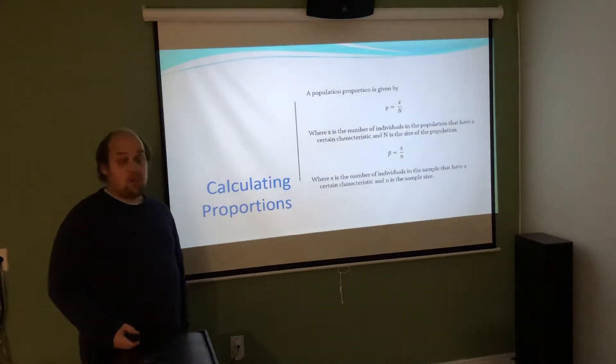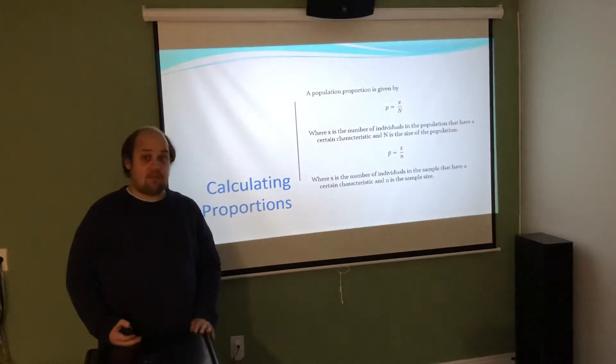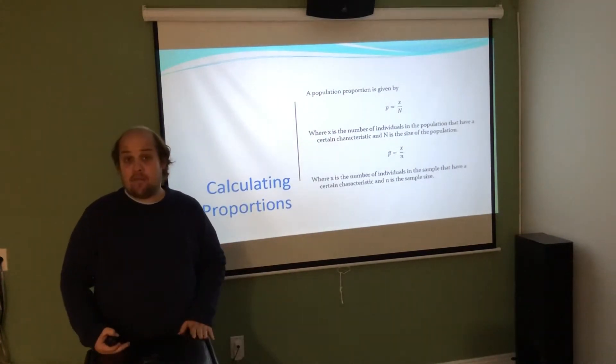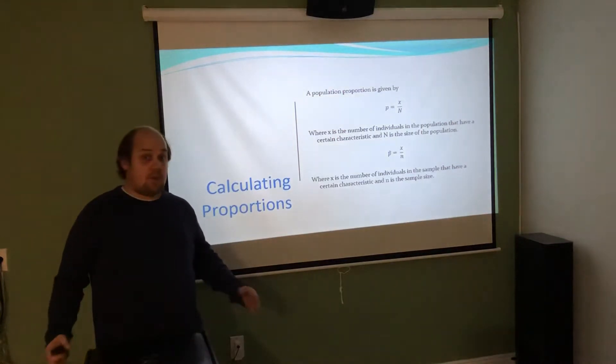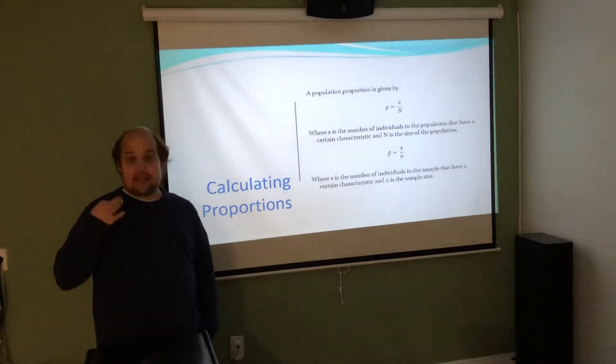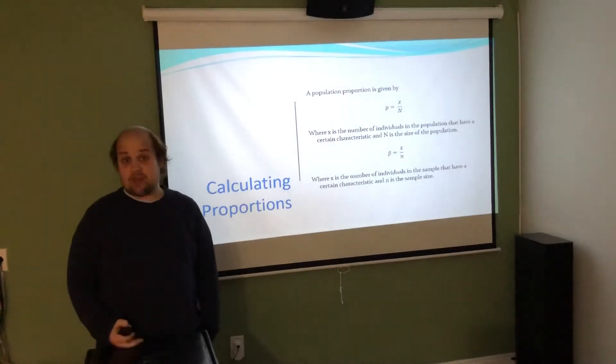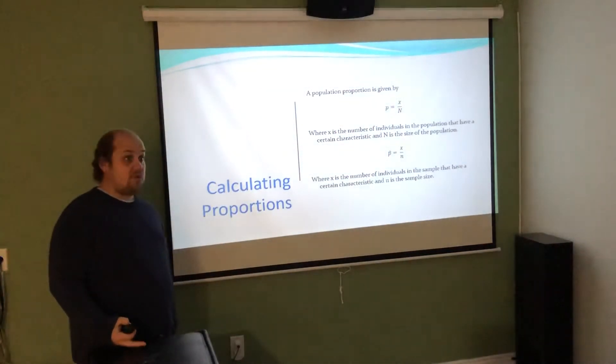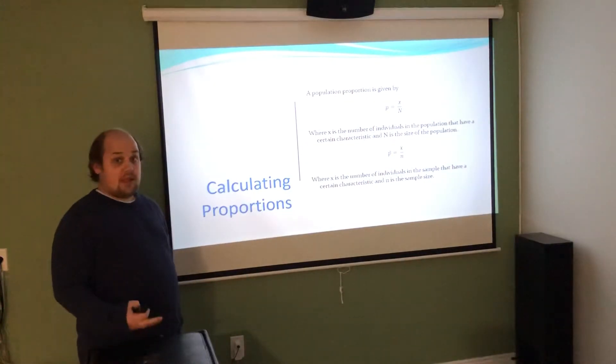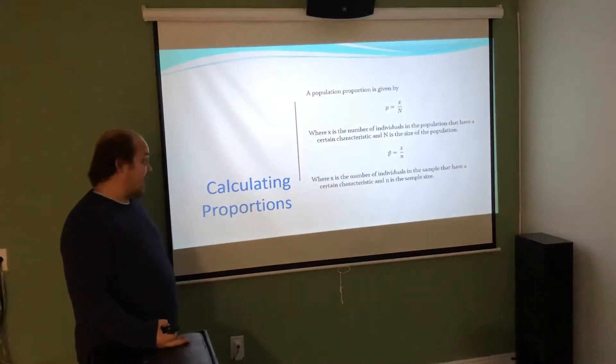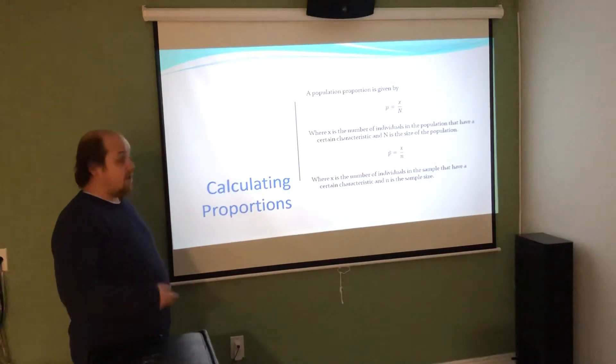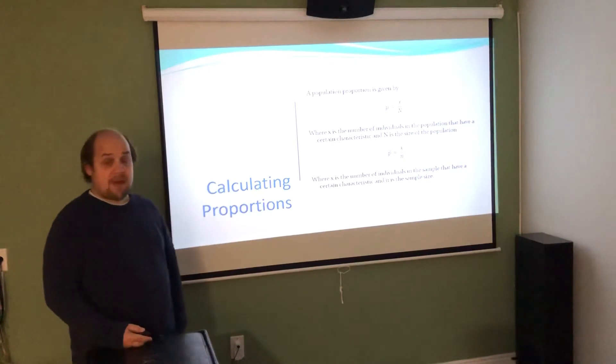We can know from polling, for instance, if we ask 200 people who they're going to vote for in Pennsylvania, and 150 say they'll vote for Joe Biden, our p hat is 150 over 200, or 0.75. In general, our p hat is our estimate for p, what the true proportion is in the population.